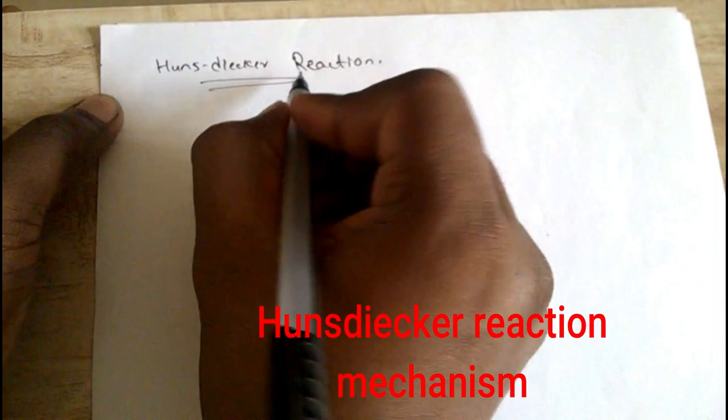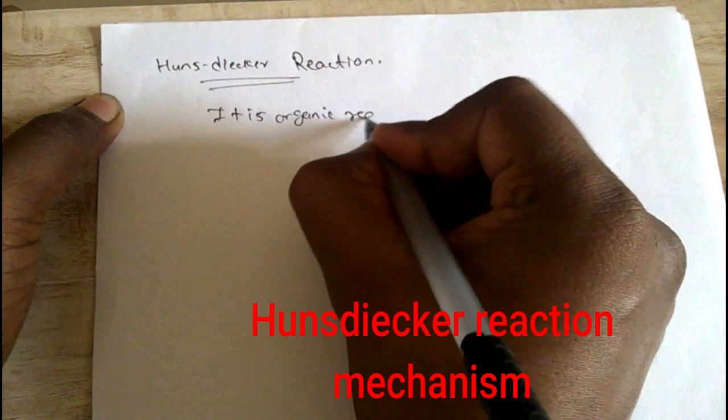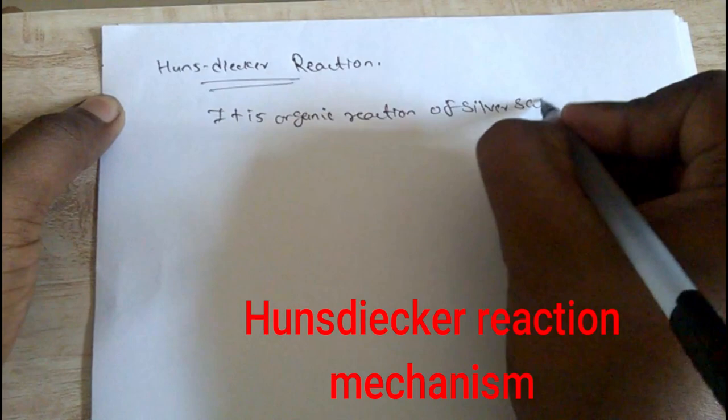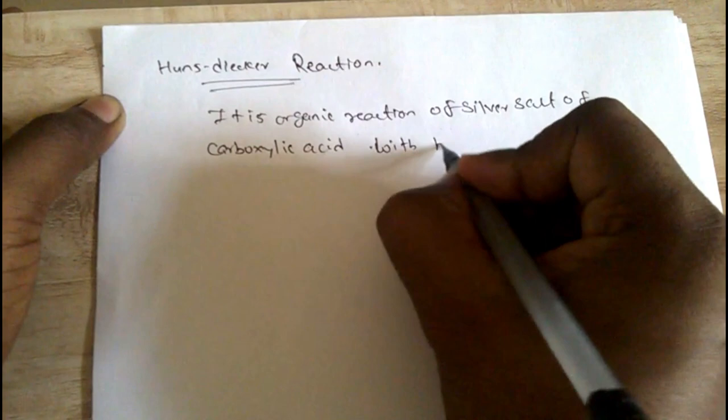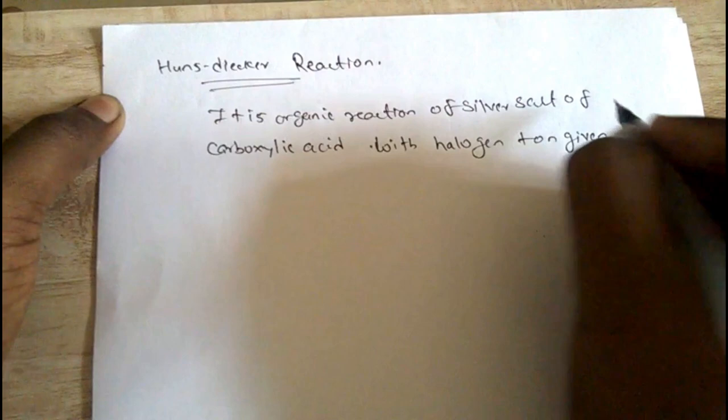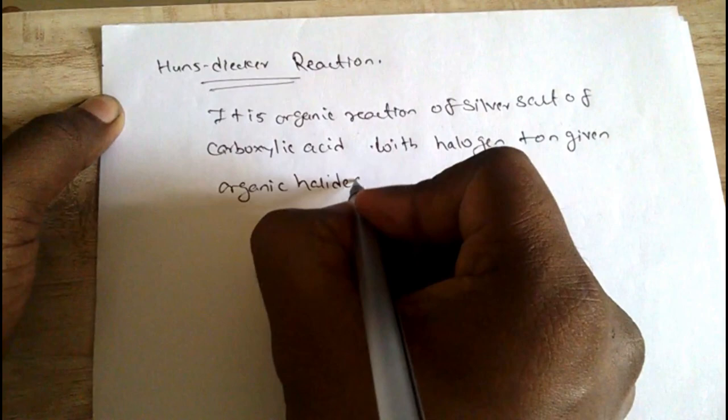It is an organic reaction of silver salt of carboxylic acid with halogen to give organic halide. It is an example of halogenation.